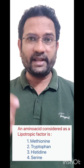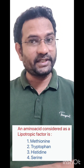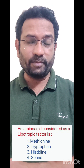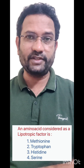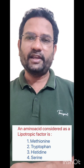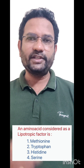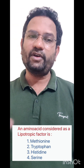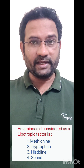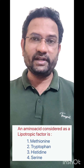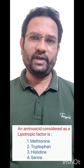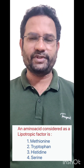Tryptophan is an aromatic amino acid. Histidine — decarboxylation of histidine gives histamine, a chemical which is released during inflammation or injury. Serine is again a sulfur-containing amino acid. Now let us move on to the next question.